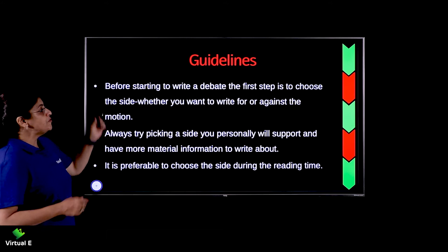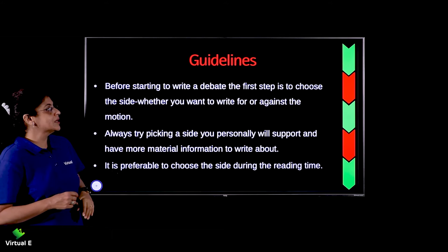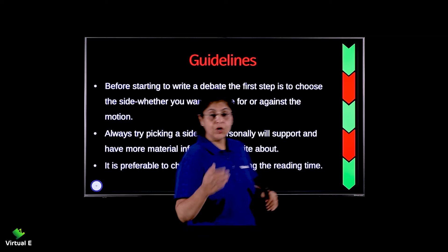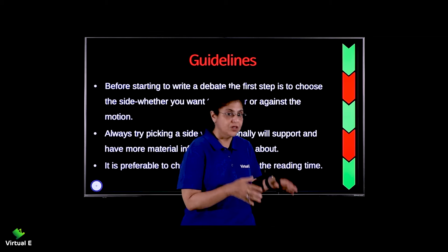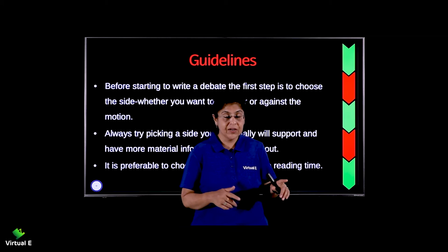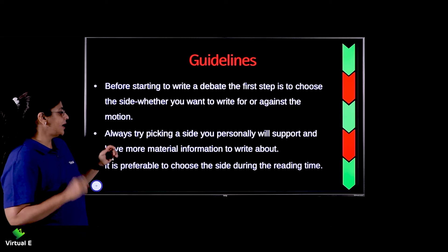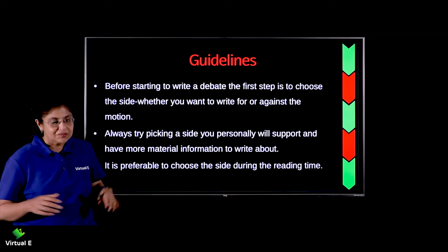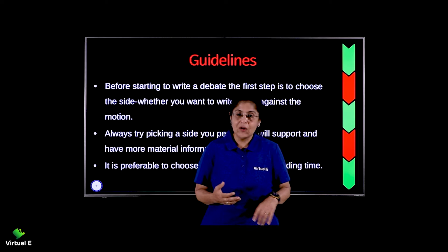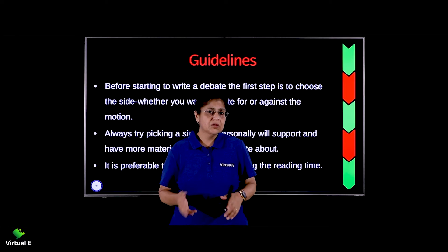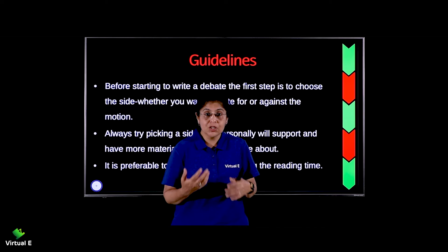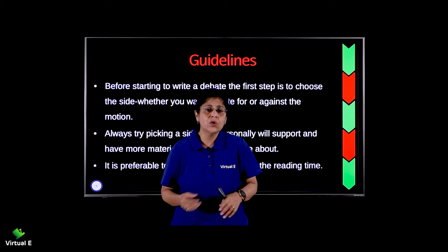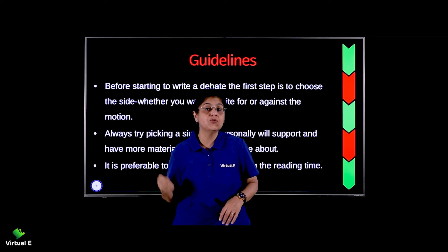What are the guidelines? Before starting to write a debate, the first step is to choose the side — whether you want to write for or against the motion. When you pick up a topic, first decide whether you agree or are against it. Always try picking a side you personally support and have more material and information to write about. For example, 'all people should be vegetarian' — you will go against it because you know not everybody would, there are people who like to eat non-veg, so you will get more information if you go against the topic.